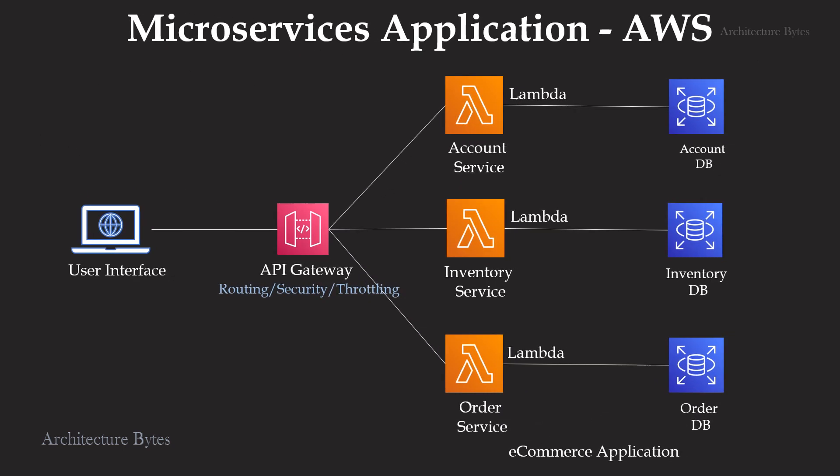Here's the same e-commerce application on AWS using Lambda functions as microservices — in this case, an account service, inventory service, and order service. Every service has its own data storage. API Gateway routes incoming requests, while the user interface could be a rich client, single-page application, or a mobile app.